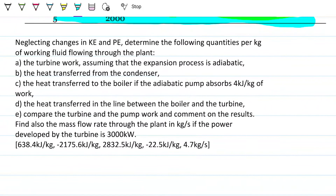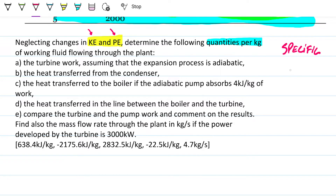Neglecting kinetic energy and potential energy is important because when we apply the first law energy balance, we don't need to worry about velocity or gravitational height. Additionally, the problem asks for all quantities per kilogram — that is, specific properties. So internal energy will be in kJ/kg, entropy in kJ/(kg·K), and so on — always per kilogram.